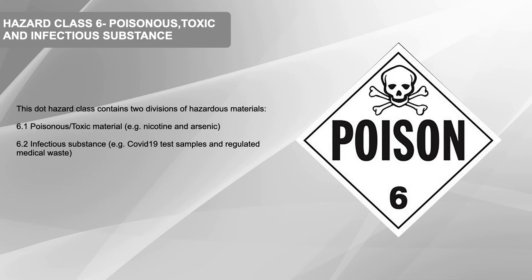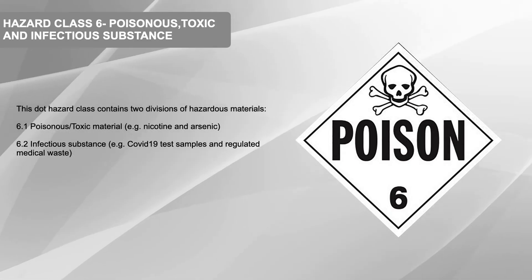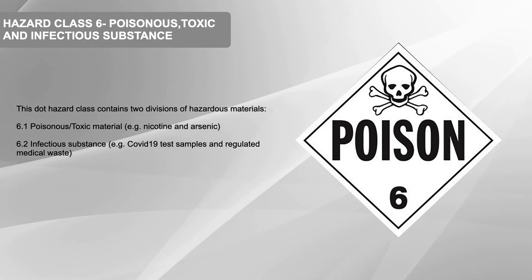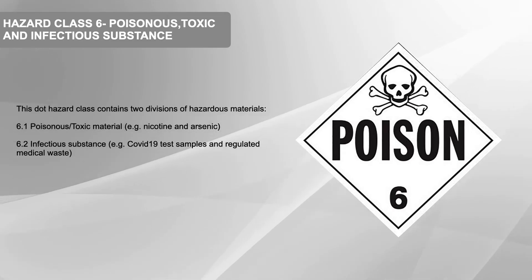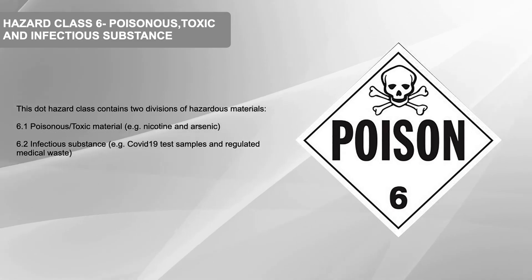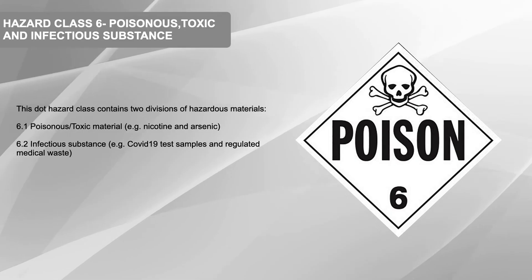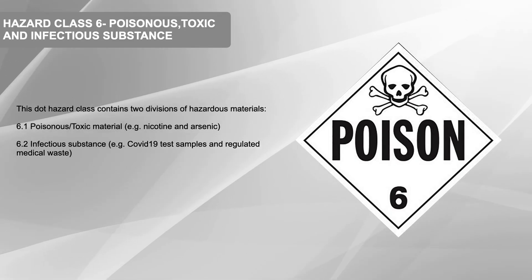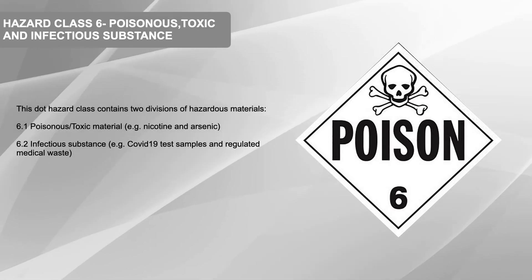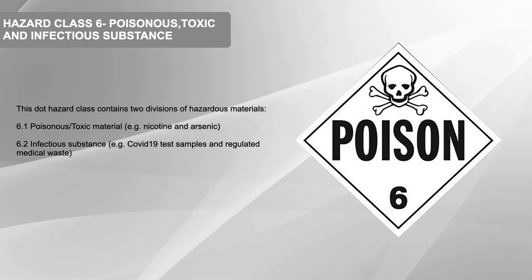Hazard Class 6: Poisonous, Toxic and Infectious Substance. This DOT hazard class contains two divisions of hazardous materials. 6.1 Poisonous/Toxic Material — Example: Nicotine and Arsenic. 6.2 Infectious Substance — Example: COVID-19 Test Samples and Regulated Medical Waste.